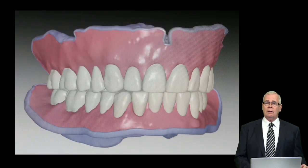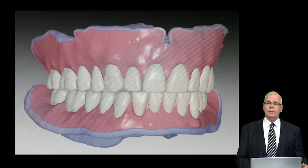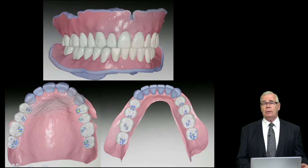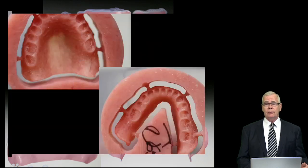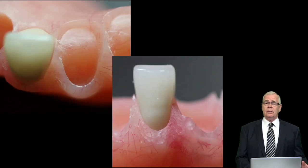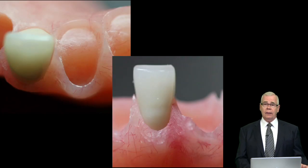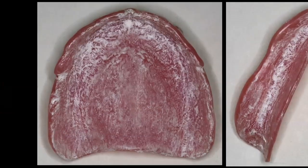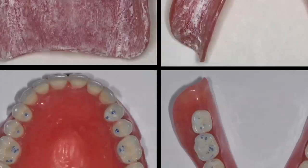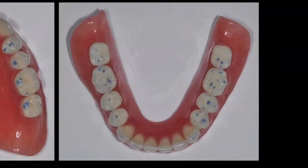After everything is scanned, the teeth are set in the computer, the base is formed, the occlusion adjusted to what we've specified — the type of occlusal scheme that we would like to produce — and denture bases are milled, into which teeth are bonded in position. This yields extreme accuracy from milled denture bases and a very appropriate occlusal relationship.